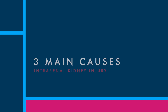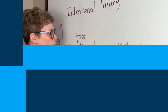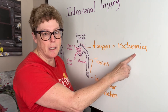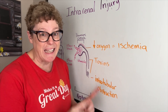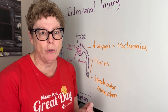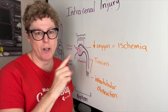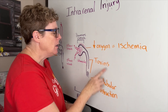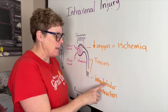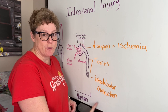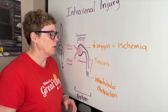There are three main causes of intrarenal failure. First is ischemia — decreased oxygen related to pre-renal failure, so go watch that video. Second is toxins. Third is obstruction. Let's look at each of these more closely.